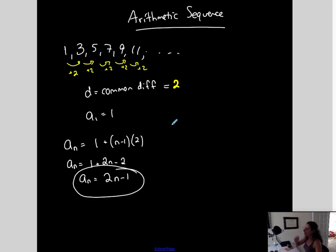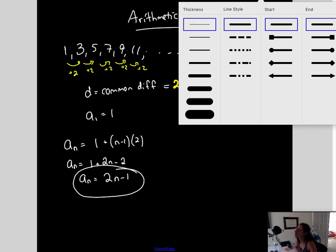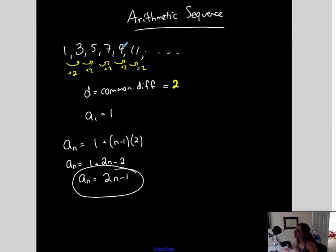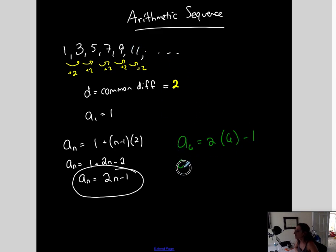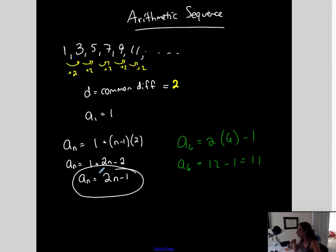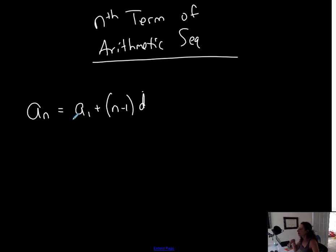So if I want now to test it — let's go to the 6th term, a6. Replace n with 6. Everywhere I see an n, I replace with 6, and I should get 11, just verifying that this nth term works. So if I want the 100th term, now I can find it. If I want the 1,000th term, now I can find it because I have the nth term in explicit form. All I have to identify is the first term and the common difference and I'm good to go.